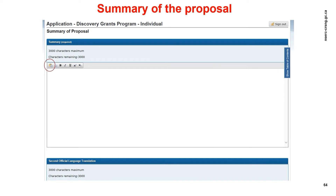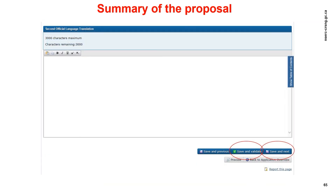Let's move on to the Summary of the Proposal module. The summary is intended to explain the proposal in language that the public can understand. Using simple terms, briefly describe the nature of the work to be done, indicate why and to whom the research is important, the anticipated outcomes, and how the research field and Canada will benefit. This plain language summary will be available to the public if your proposal is funded. Note that the shortcut Ctrl-V to paste on the Research Portal does not work — instead, use the icon circled in green on the screen. A dialogue box will pop up that will accept copy and paste functions. The number of remaining characters is indicated above the text box. A translated summary of your proposal can also be included. Click save and validate, then save and next to proceed.